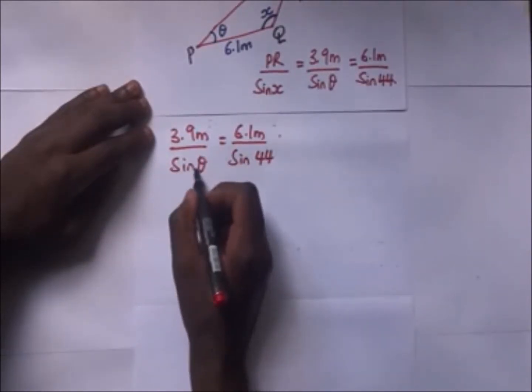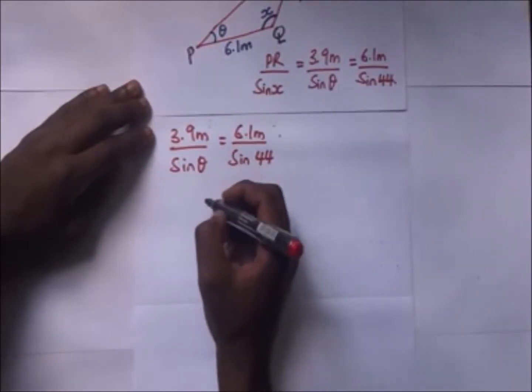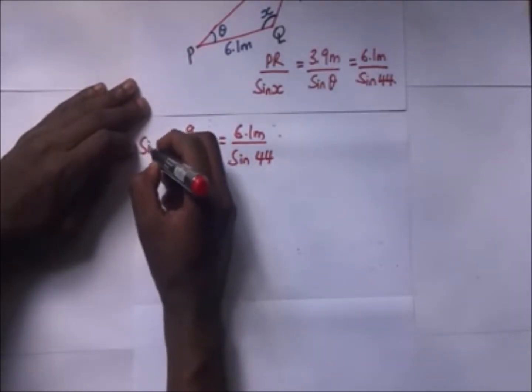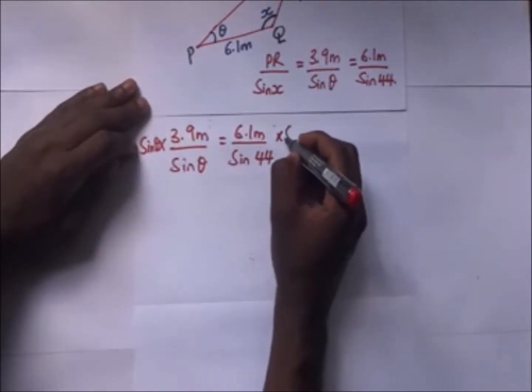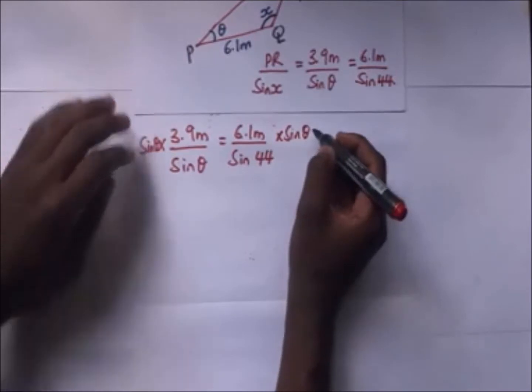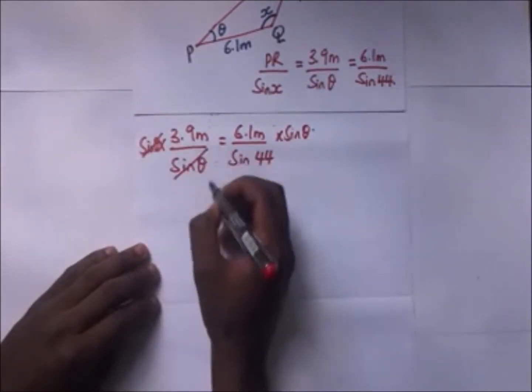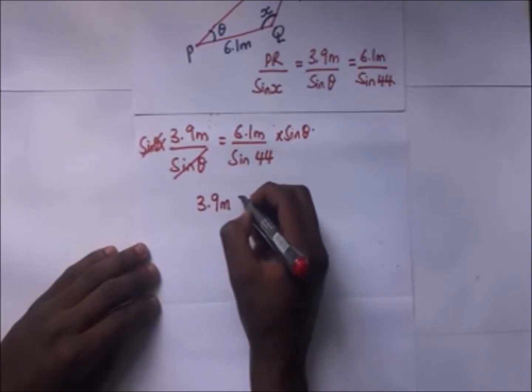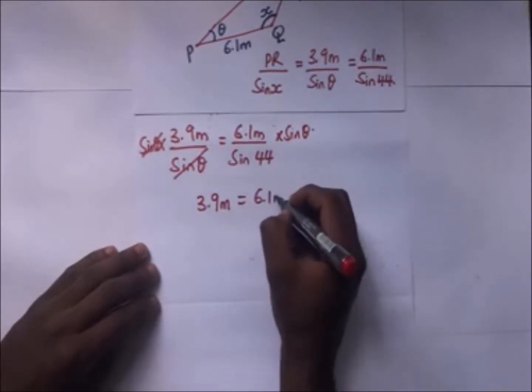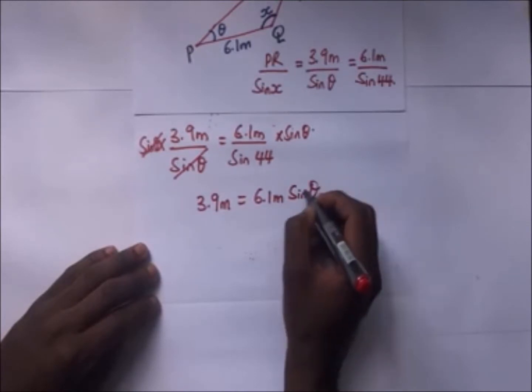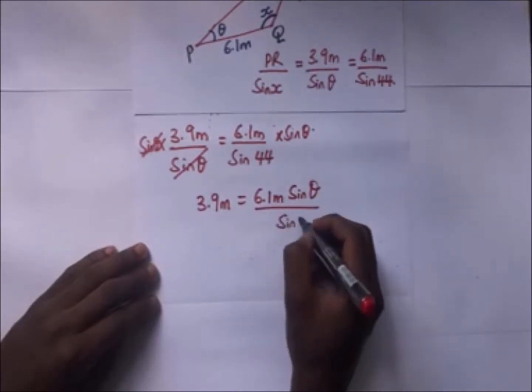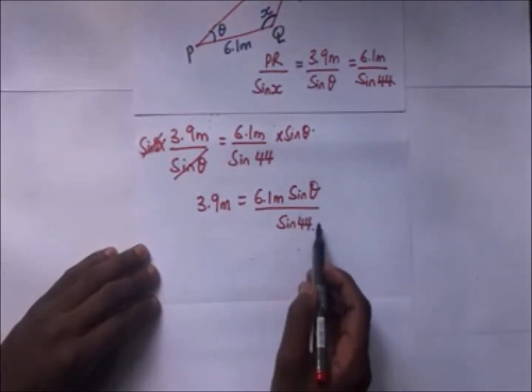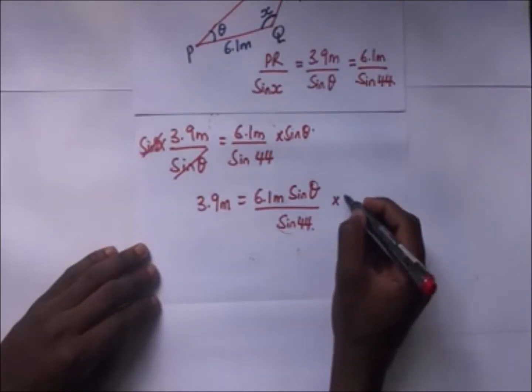So we make sine theta the subject of the formula. When we multiply sine theta on both sides, so that this goes with that, we remain with 3.9 meters is going to be 6.1 meters sine theta over sine 44. So we multiply sine 44 on both sides.